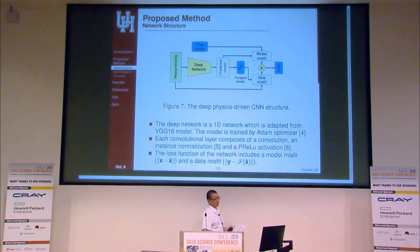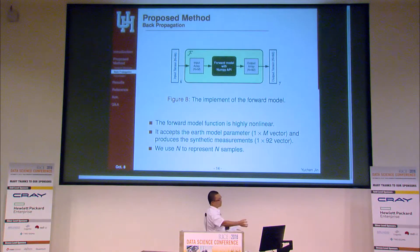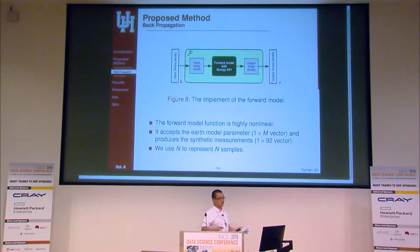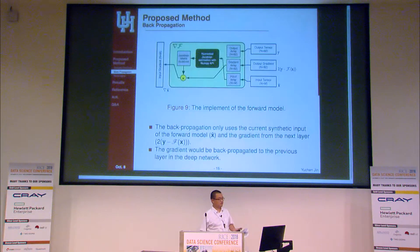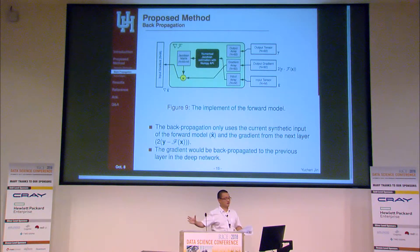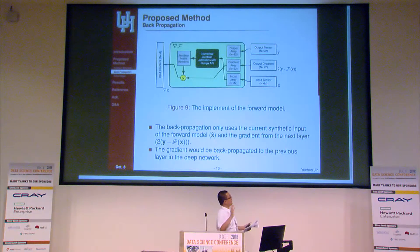Why does incorporating the forward model improve performance? During the feed-forward process the forward model function acts as a black box that accepts the Earth model and produces measurements. During back-propagation, we treat the gradient from the next layer as known, compute the Jacobian matrix of the forward model, and use it to back-propagate the gradient of the loss function all the way to the input space.